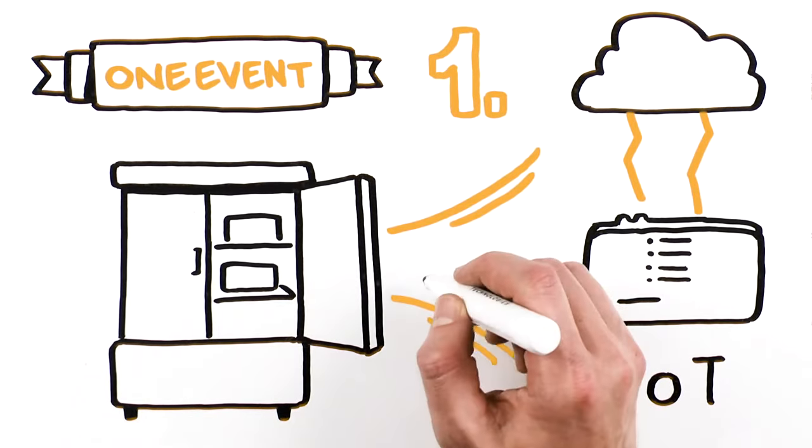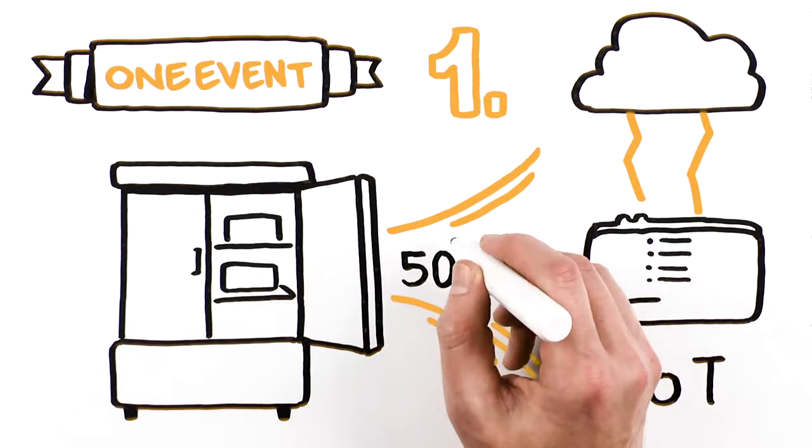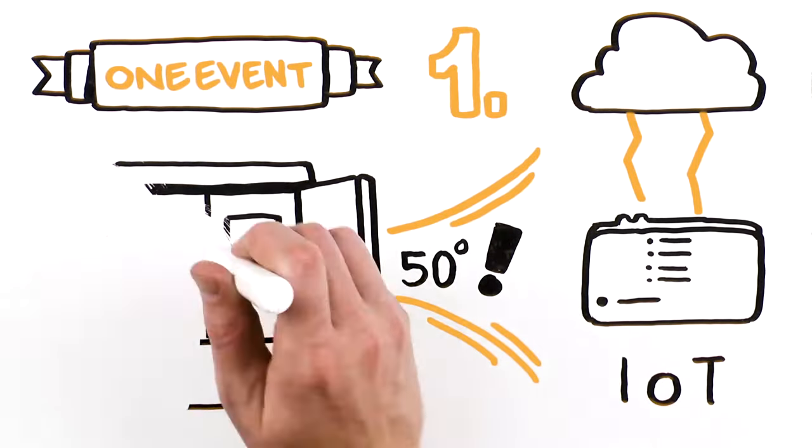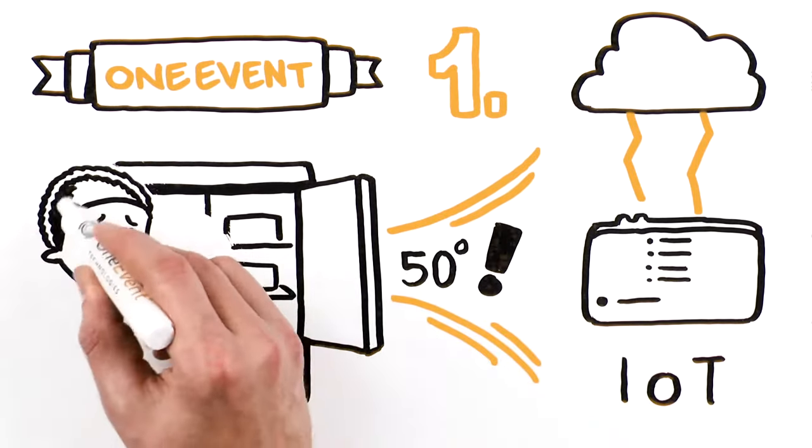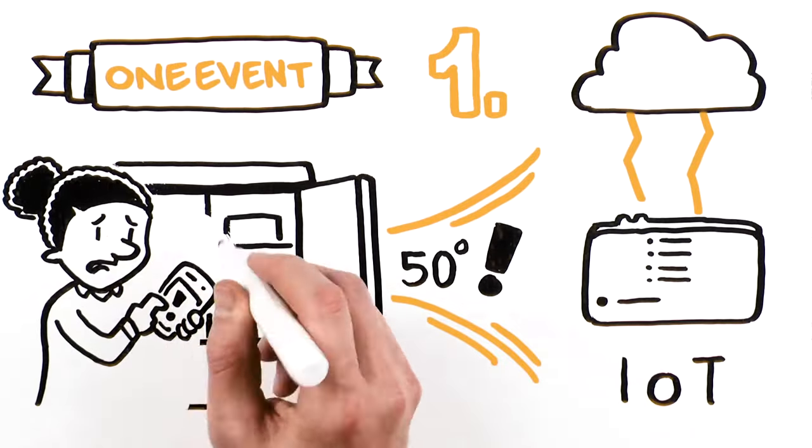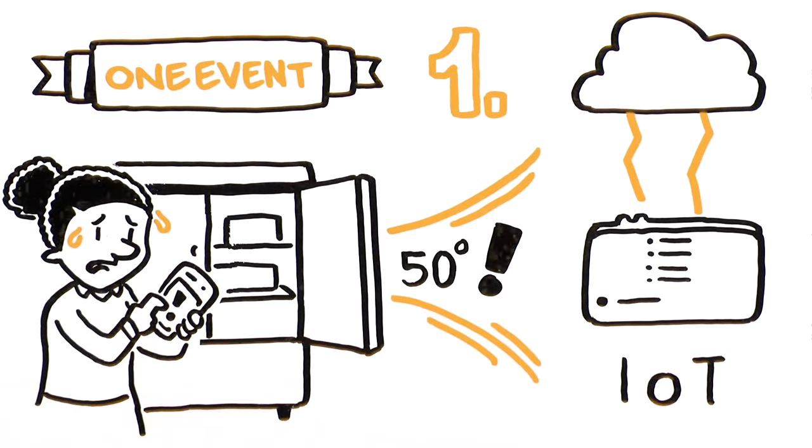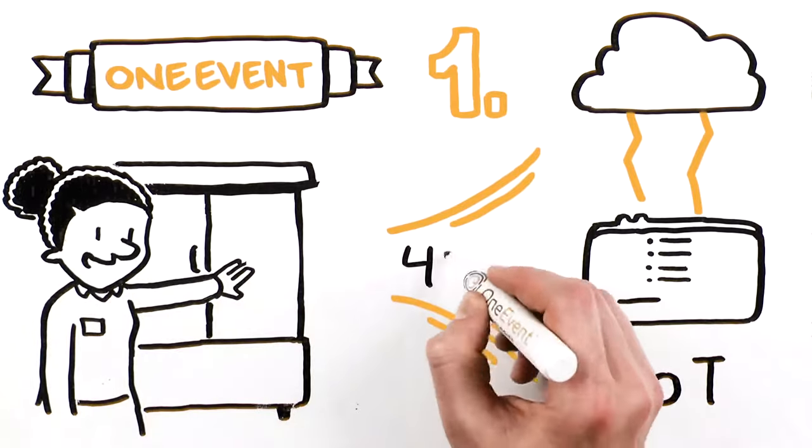When OneEvent learns that a temperature has exceeded your preset limits and an excursion has occurred, you'll be notified. Alerts are sent to a mobile device via email, text, or push notification, empowering you to correct the problem before inventory is affected.